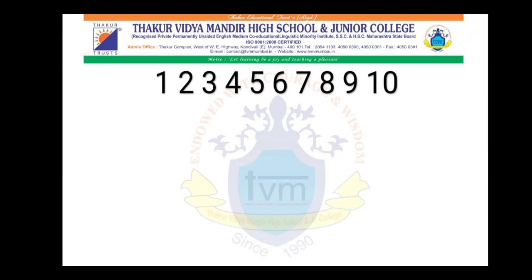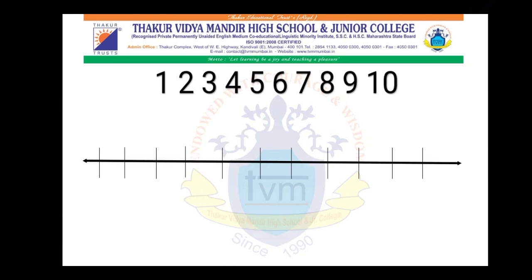Today we learn to place them on a number line. On a number line, the number line starts with 0. This is a line, and we place here the numbers, which starts from 0. 0 comes before 1. So after 0, the next numbers are 1, 2, 3, 4, 5, 6, 7, 8, 9, 10. When the numbers are placed on a line, it forms a number line.